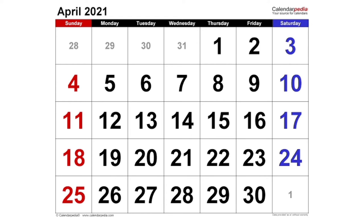Ovulation is the release of a mature egg. This mature egg is released from the ovary, which is the part of the female reproductive system responsible for producing eggs. Ovulation occurs just once in your cycle, and only one egg is released each cycle. This occurs so that should the egg come in contact with any sperm cell, fertilization will occur, conception takes place, and new life begins.